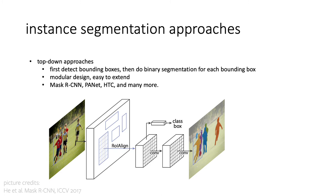There are two main families of instance segmentation methods. The first is top-down, or proposal-based approaches. These extend bounding box detection by adding an additional segmentation head. They generate proposal boxes, then given each proposal box, the segmentation head extracts features from intermediate network representations and produces mask predictions for each box independently. The key advantage is their modularity — if you want to predict a new modality, like key points for people, you simply add another head that predicts key points for each box proposal.